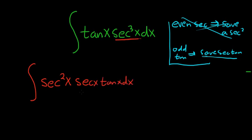So we saved a secant tangent. Secant times secant squared is secant cubed. So we've done nothing except rewrite this. We're saving a secant tangent. So why would we do that? Well, secant tangent is the derivative of secant.